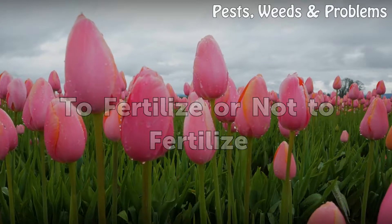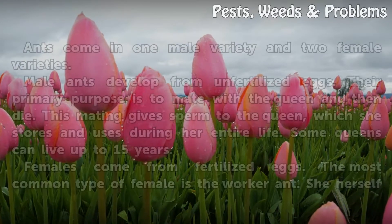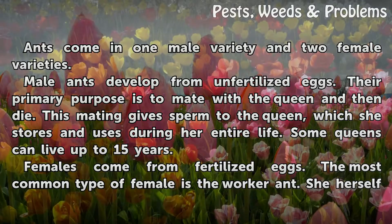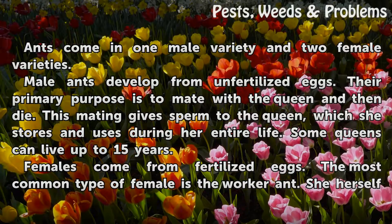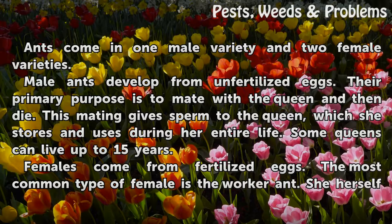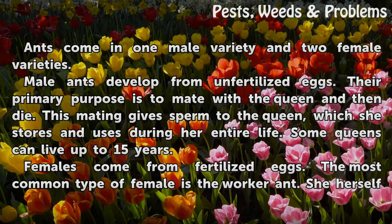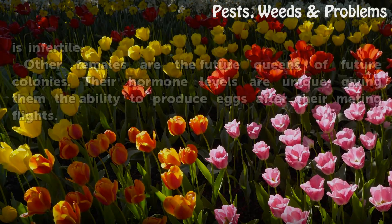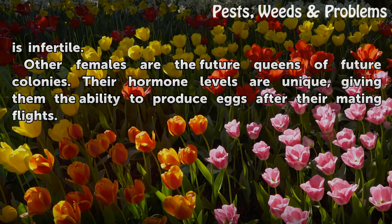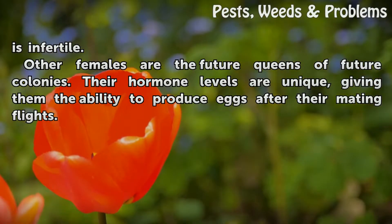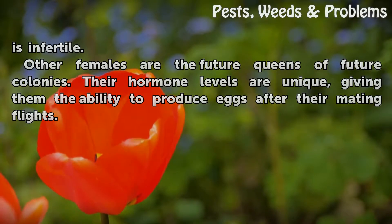To fertilize or not to fertilize? Ants come in one male variety and two female varieties. Male ants develop from unfertilized eggs. Their primary purpose is to mate with the queen and then die. This mating gives sperm to the queen, which she stores and uses during her entire life. Some queens can live up to 15 years. Females come from fertilized eggs. The most common type of female is the worker ant, who herself is infertile. Other females are the future queens of future colonies, with unique hormone levels giving them the ability to produce eggs after their mating flights.